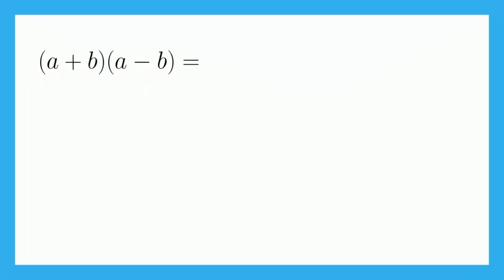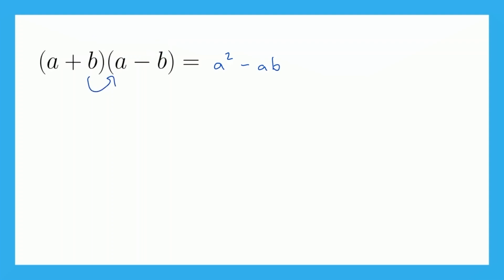So let's work this out the long way and then eventually we'll see the shortcut that we can use in the future. So a times a is a squared. Now we need to do a times negative b, which is negative ab, so minus ab. Now we need to do b times a — putting the a first — so plus ab. And lastly, b times negative b gives us negative b squared, so minus b squared.